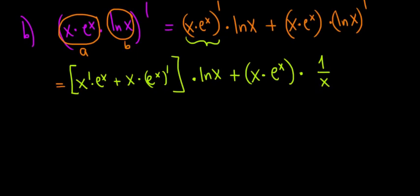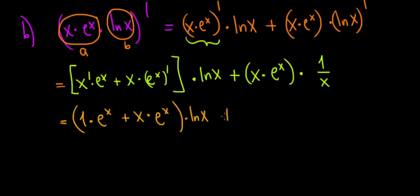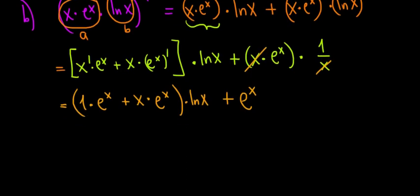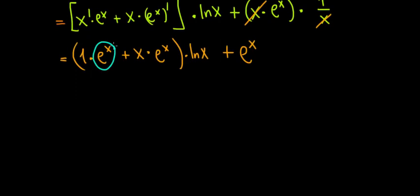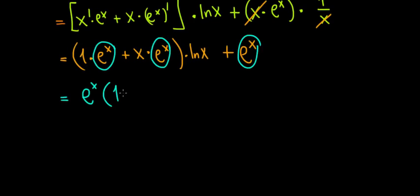x derivative is 1, and the derivative of e to the power of x is just e to the power of x. So we have (1 times e to the power of x plus x times e to the power of x), multiplied by ln x, plus x times e to the power of x times 1 over x. The x's cancel out, leaving plus e to the power of x. We can see e to the power of x as a common term throughout.